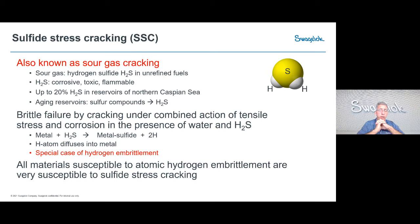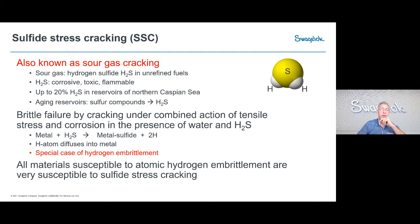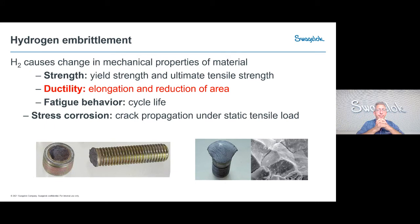A niche form of stress corrosion cracking is sulfide stress cracking, very common in upstream oil and gas as sour gas cracking. Hydrogen sulfide becomes more prevalent in oil wells where seawater injection creates chemical reactions generating H₂S. H₂S is both hazardous and corrosive, and it also generates atomic hydrogen, which can lead to hydrogen embrittlement. Selecting materials resistant to both hydrogen embrittlement and hydrogen sulfide is very critical for these applications.